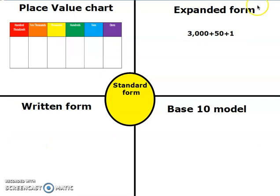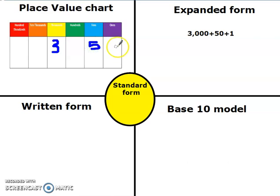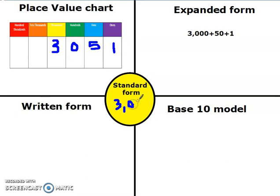Let's look at another one. This time we have our expanded form, and now we have to figure out how to get our base 10 model and our written form. I like to use my place value chart. I know that my expanded form says I have 3,000, so that means I have a 3 in the thousands place. I have 50, so I have 5 tens, because 5 tens tells me it's 50, and only 1 one. If I don't have a number in the hundreds place — there's no hundreds — then I have to put a zero.